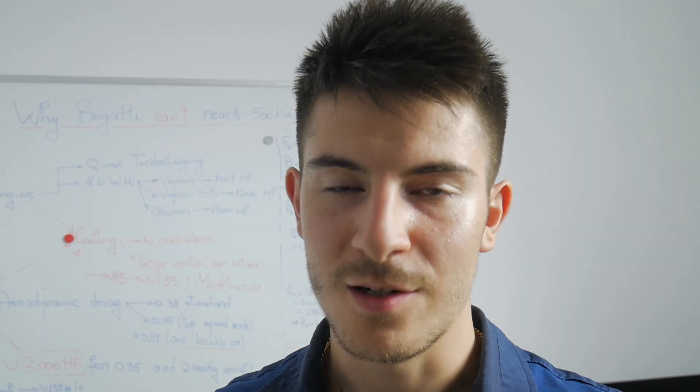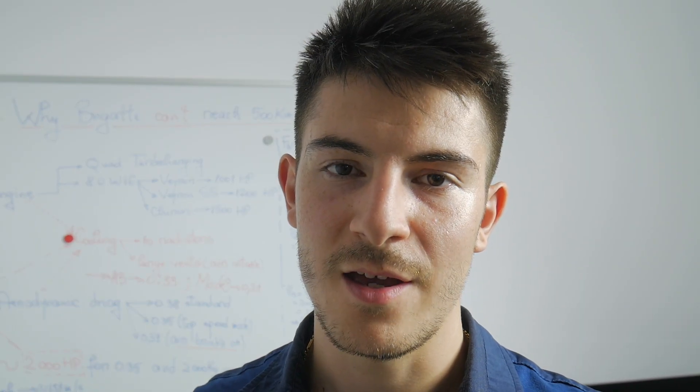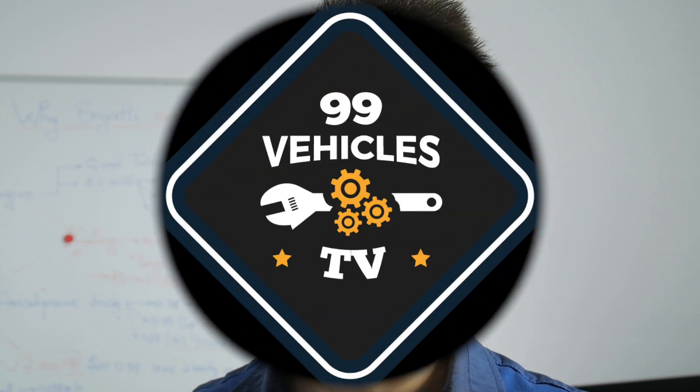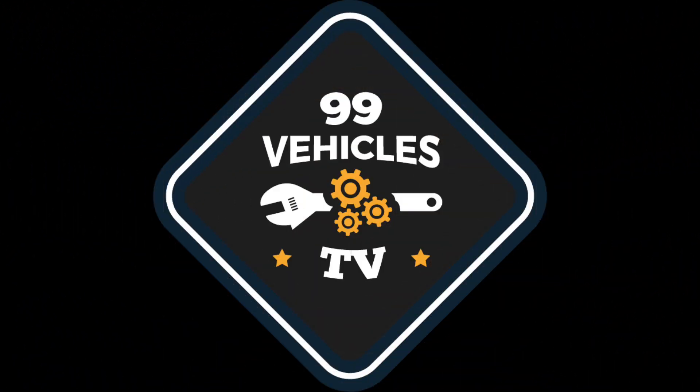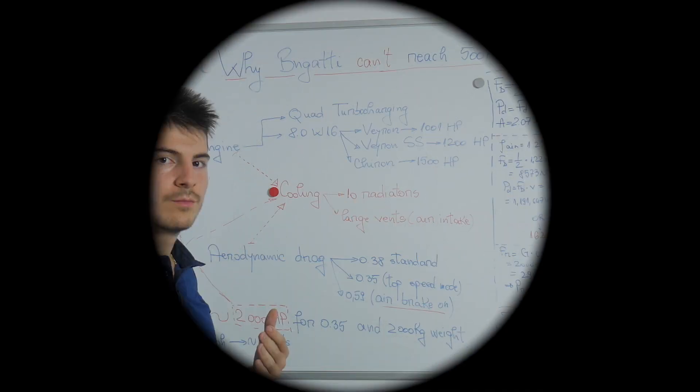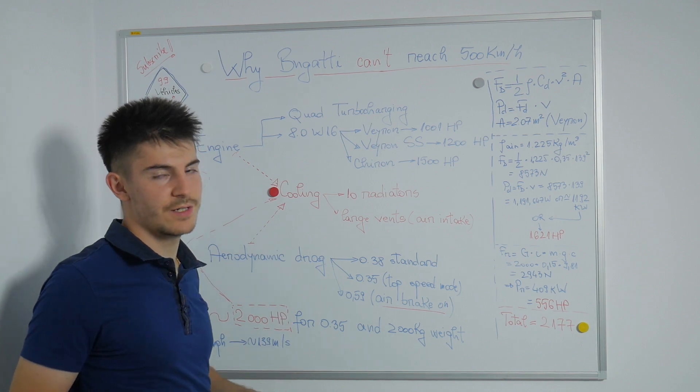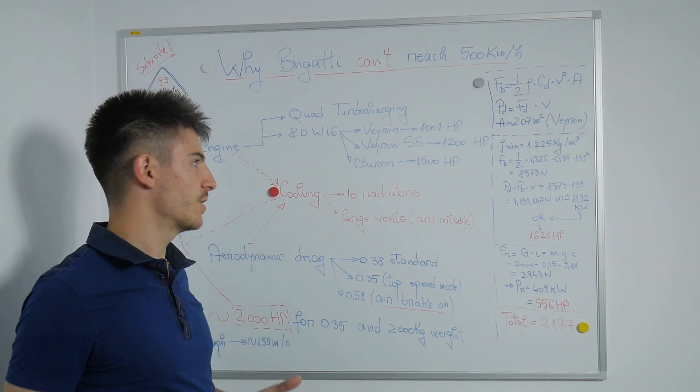Hey guys, in this video I would like to talk about why no car has ever reached over 500 kilometers per hour. Bugatti claimed when they created the Veyron that the 8-liter W16 quad-turbocharged gasoline engine could develop up to 3,000 horsepower.